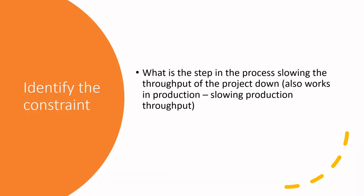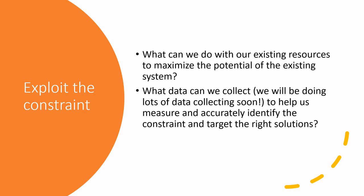Let's recap what we just did. We identified the step in our process that slowed the project down — in the mochi ice cream case, based on our CPM mapping, it was ordering our supplies from our ingredient supplier and the long duration it took to get those supplies to us. The next piece of the puzzle is: how do we exploit that constraint? What can we do with existing resources to maximize the potential of the existing system?